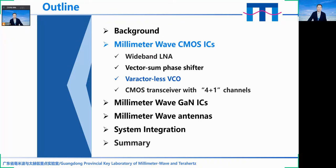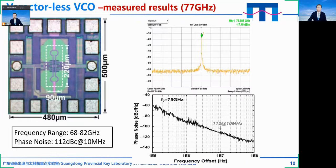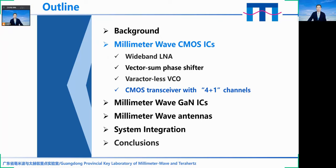Now let me introduce a new VCO design. Here is the photo of the chip. On the right-hand side is the spectrum of the 77 GHz oscillator and the phase noise of the oscillator, which is minus 112 dBc/Hz at 10 MHz offset.